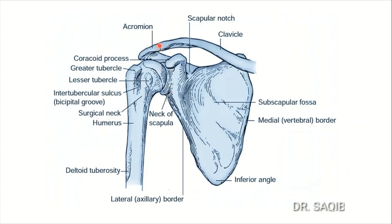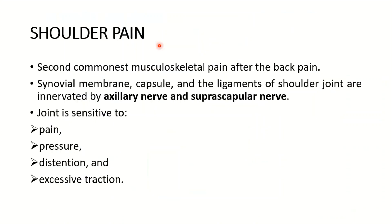The anatomy of the shoulder joint is already discussed and uploaded on my channel Learning Anatomy; you could see it there for any detail. Continuing with the shoulder pain, it is the second commonest musculoskeletal pain after the back pain. The synovial membrane, capsule and the ligaments of the shoulder joint are innervated by the axillary nerve and the suprascapular nerve.